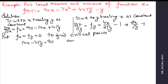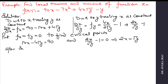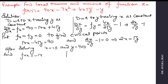Setting the derivatives to zero: 14x - 4√y = 90 and 2x / √y - 1 = 0, which means 2x = √y. After solving both equations, we get x = 15 and y = 900. So the critical point is (15, 900).